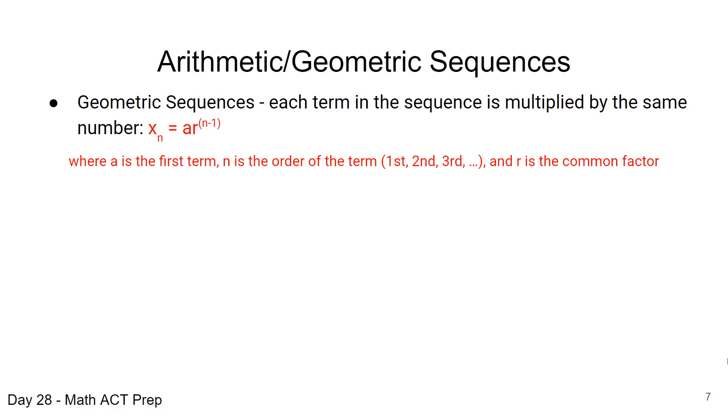So previously we were given the example where we were looking for this second term in this sequence, and we started with a 2, that's our a value here. We found the common factor, what we multiplied each previous term by, to be 3.